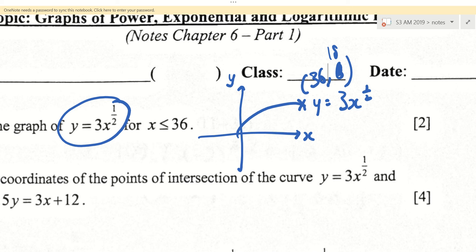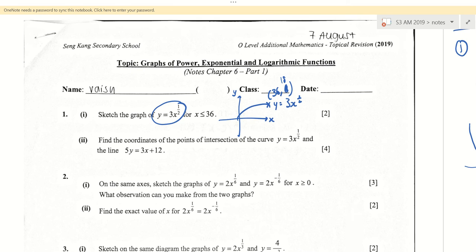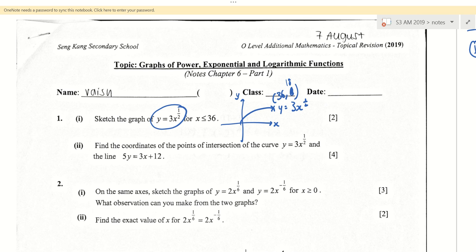For part 2, it's simultaneous, right? Yes. For part 2, it's simultaneous. So, to find the coordinate, you always use substitution.